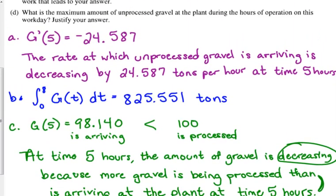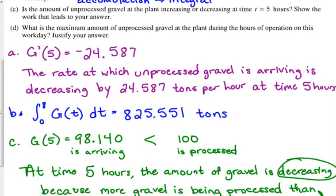Part A showed that the rate at which gravel is arriving is decreasing — but that's not what C is asking. I know what you're thinking: usually for increasing and decreasing we look at the derivative, but you have to look at what they're specifically asking about. They're asking about the overall amount of unprocessed gravel at the plant. You have two factors: gravel coming in and gravel being processed. You have to compare those two amounts at that specific time to determine increasing versus decreasing. G prime is the rate of change of the arrival, not the rate of change of the total gravel.